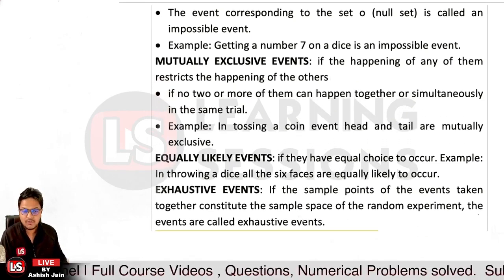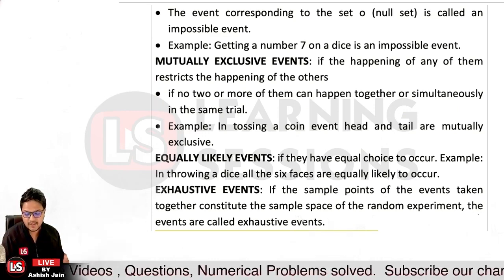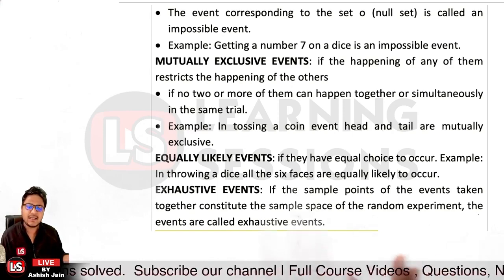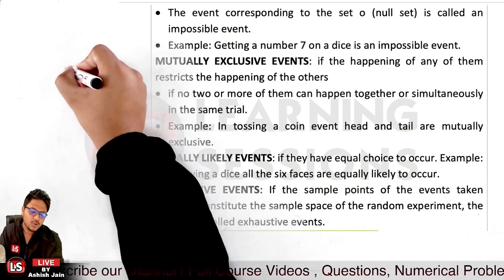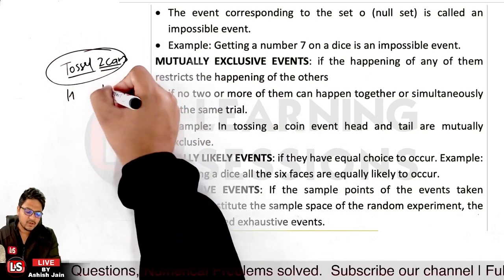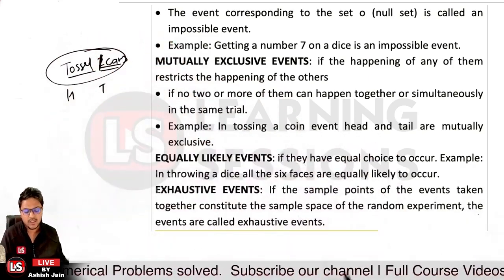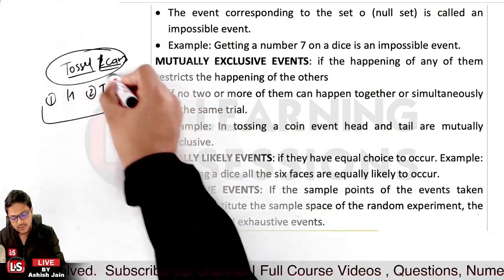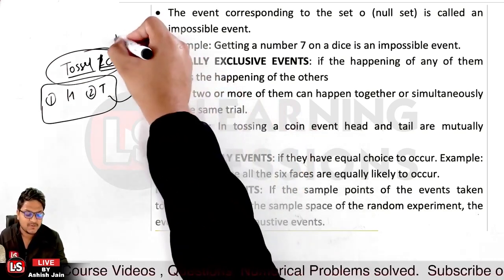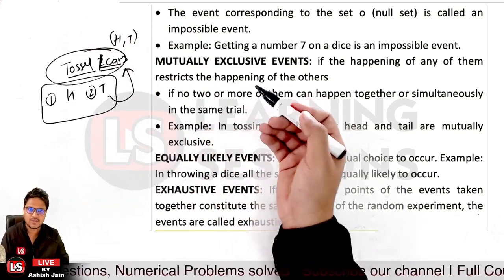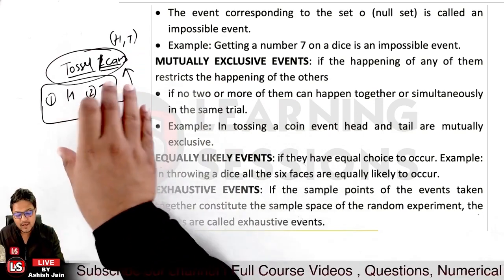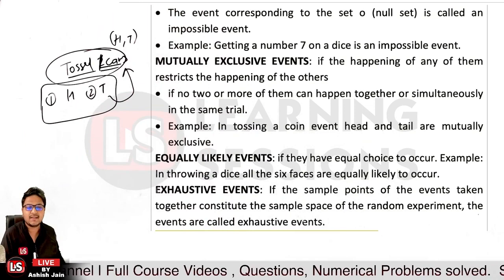Equally likely events are those where there are equal chances for all outcomes — like throwing a dice, where each of 1, 2, 3, 4, 5, or 6 is equally likely. Exhaustive events are events that, when combined, completely coincide with the sample space. For example, tossing one coin — getting head in one trial and tail in another — these events together equal the sample space {H, T}.